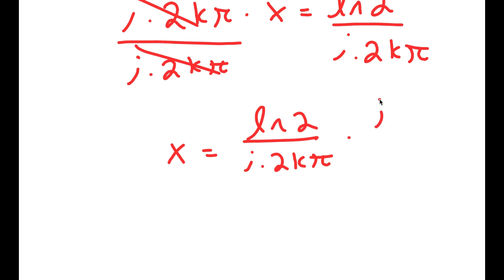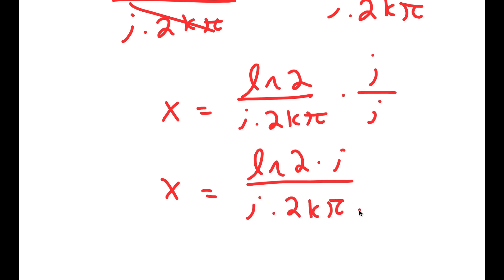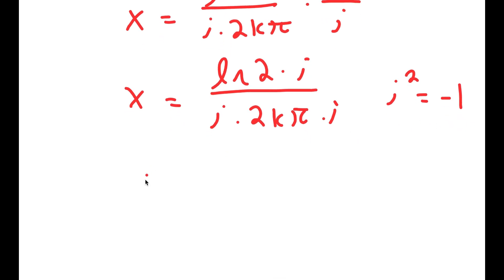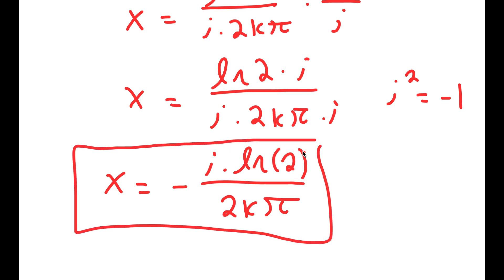Now I'm going to multiply both sides by i over i, which equals 1. So x equals ln 2 times i, over i times 2k pi times i. Since i times i is i squared, and i squared equals negative 1, I get x is equal to negative i times ln 2 over 2k pi. So this is my answer to this equation. Thank you very much.